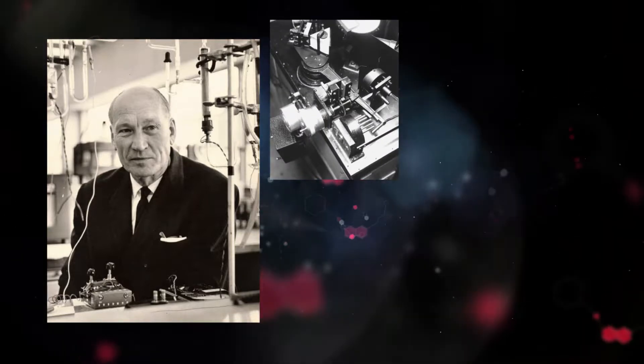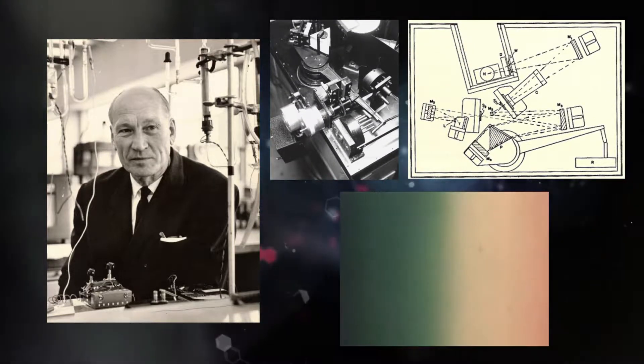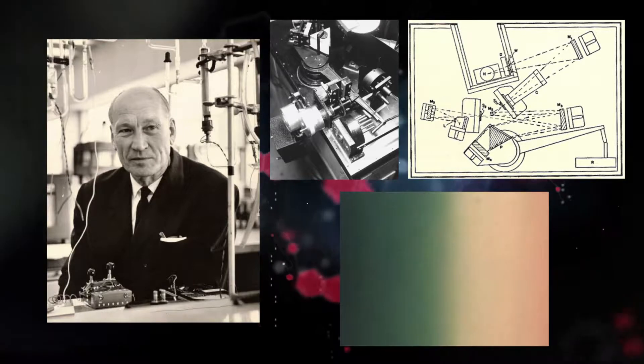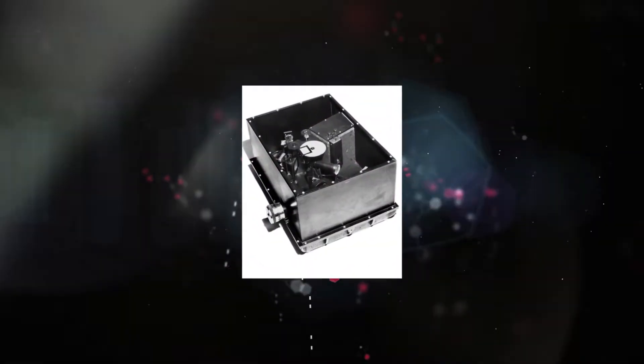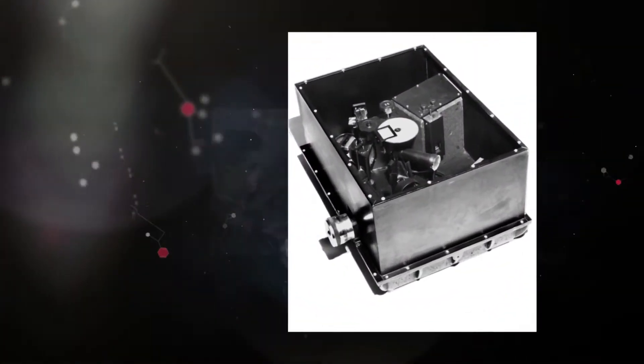Arnold Beckman was the first to manufacture the two most widely used spectrophotometers, those based on measurement of the absorption of ultraviolet and infrared light. Infrared spectrophotometers quickly became the chemists' instrument of choice.